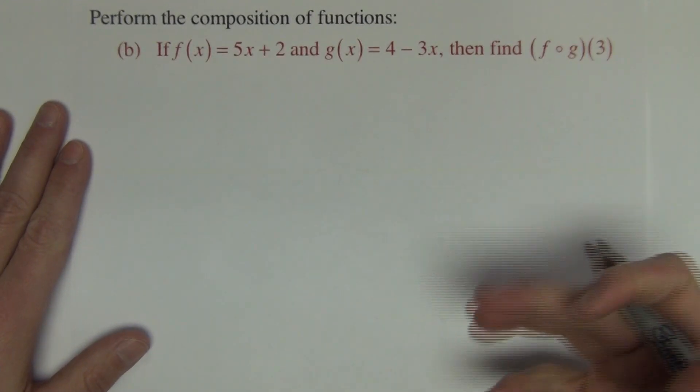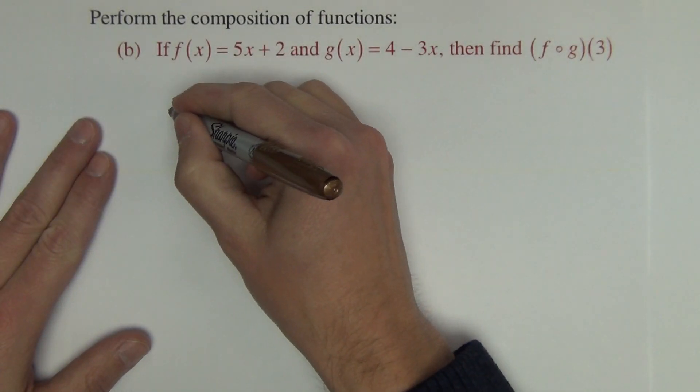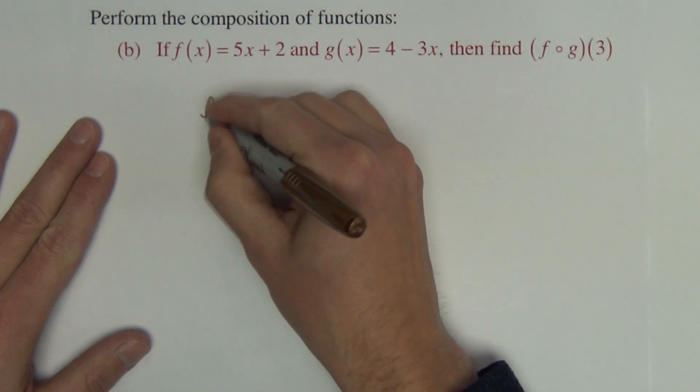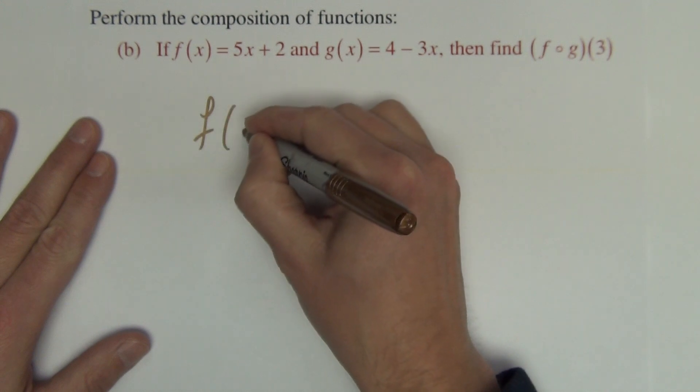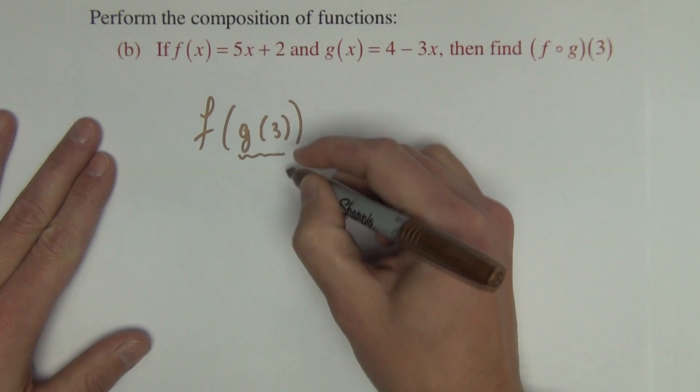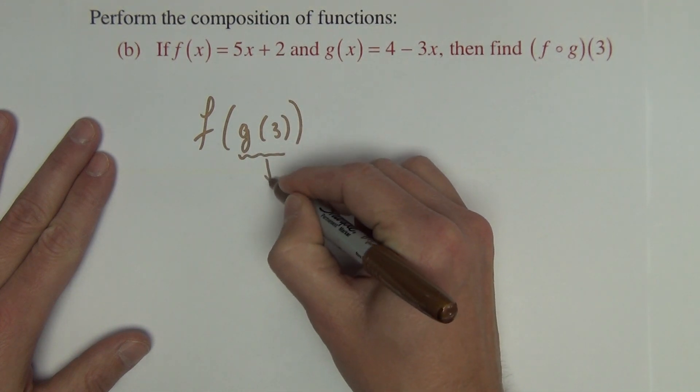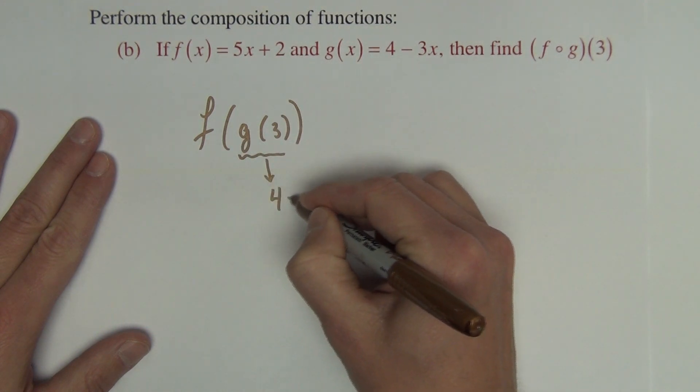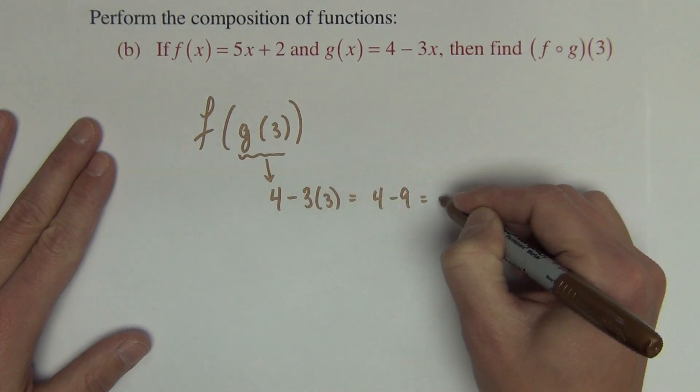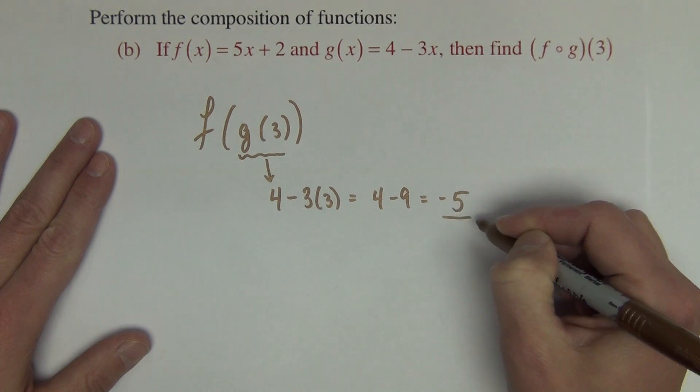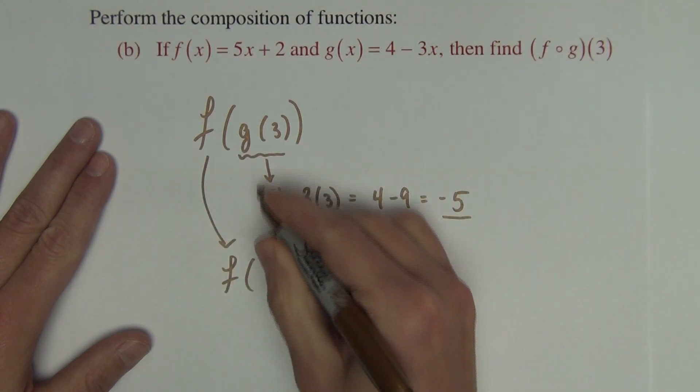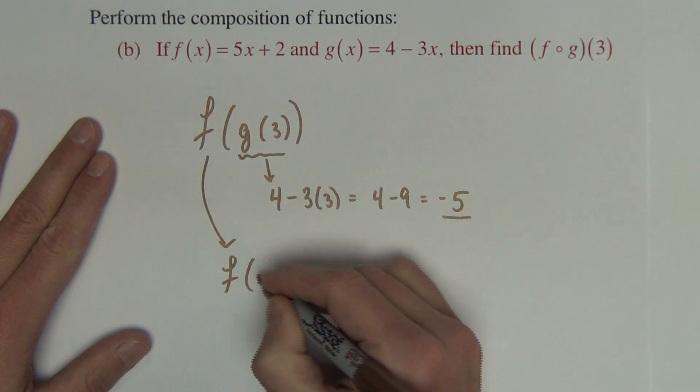Next problem is the same type. I again like to rewrite it first. So f of g of 3 is the same as f of g of 3. So I'm going to begin right here. And g of 3 is 4 minus 3 times 3, which is 4 minus 9, which is negative 5.